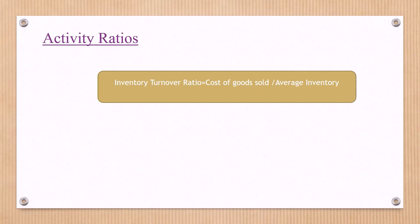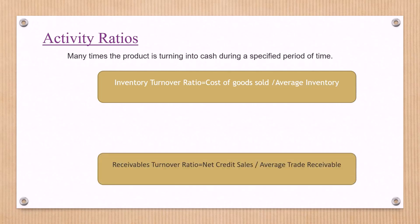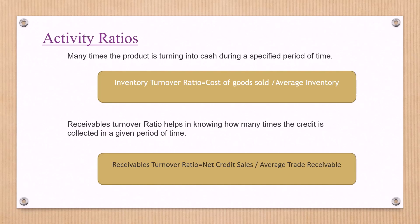The next ratio is the activity ratio, also called the turnover ratio. Under this ratio, there is the inventory turnover ratio. The formula is cost of goods sold divided by average inventory. Cost of goods sold equals opening stock plus purchases minus closing stock. Average inventory equals opening stock plus closing stock divided by 2. There is also the receivables turnover ratio: net credit sales divided by average trade receivables. This ratio helps in knowing how many times credit is collected in a given period of time.